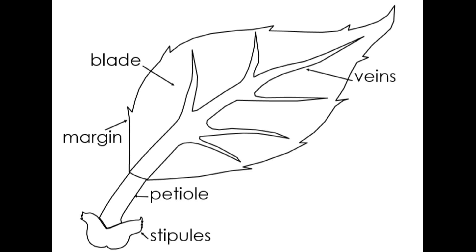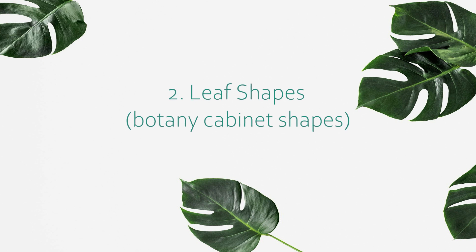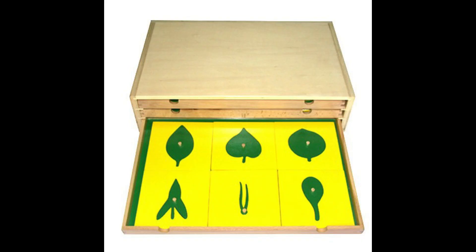Next we're going to be covering leaf shapes, which is also the botany cabinet shapes. The botany cabinet that you would normally use looks like the picture in front of you. Unfortunately, we don't have the botany cabinet or the leaf cabinet with us, so I decided to compare these leaf shapes with real-life leaf shapes that you might see outside. For this portion of the video showing shapes of leaves, there will not be any audio, so feel free to just take a look at the pictures.